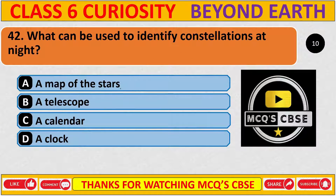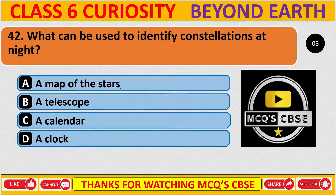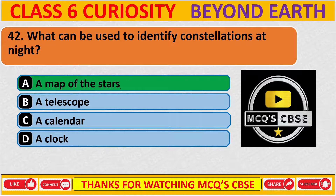What can be used to identify constellations at night? The correct answer is A, a map of the stars.